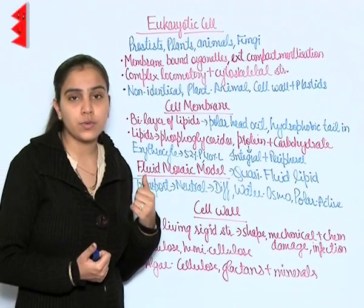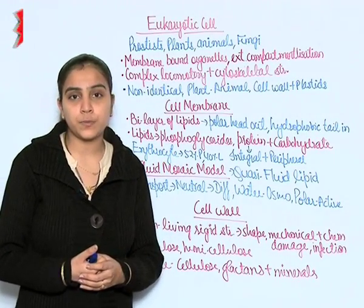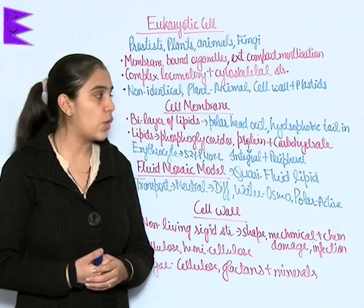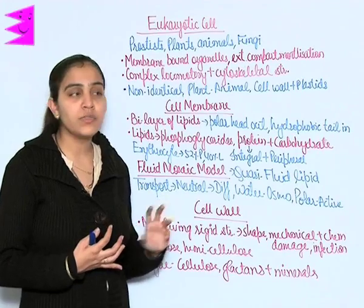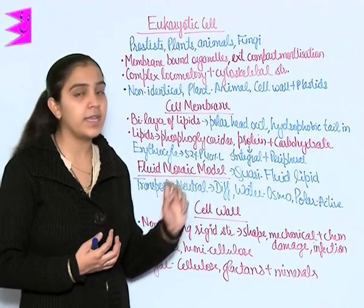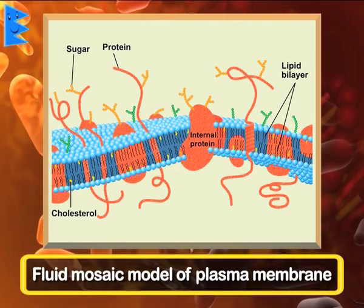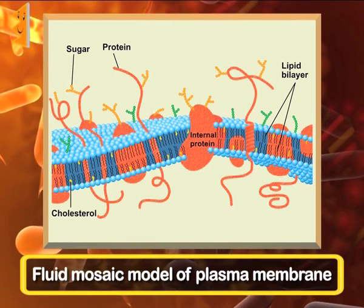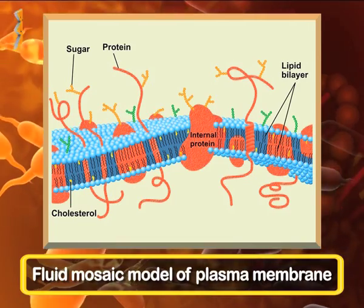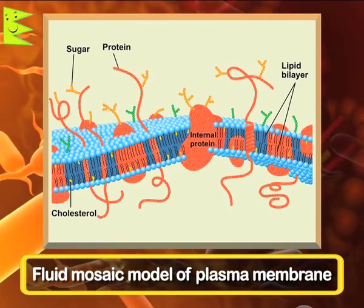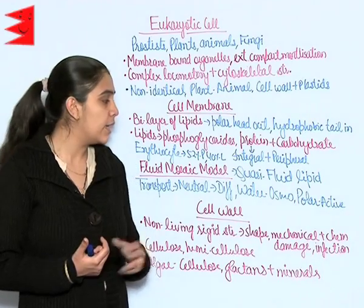For example, the erythrocyte contains 52% protein and 40% lipid. The well-accepted model of cell membrane is the fluid mosaic model. You can see it in the diagram — how proteins are attached and how the arrangement of lipids is shown.